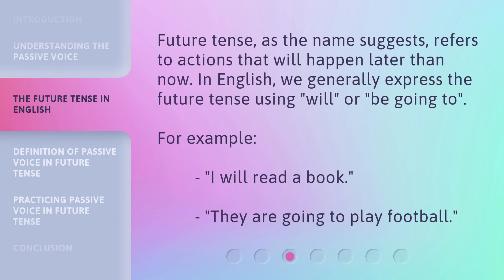Future tense, as the name suggests, refers to actions that will happen later than now. In English, we generally express the future tense using 'will' or 'be going to'. For example: I will read a book. They are going to play football.